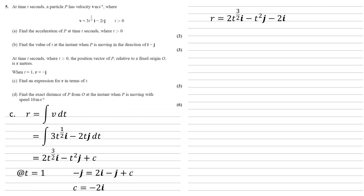Putting this back on the end, we get a final answer that r is equal to 2 times t to the 3 over 2i minus t squared j minus 2i.